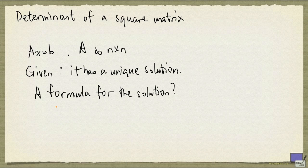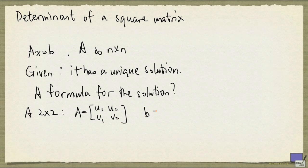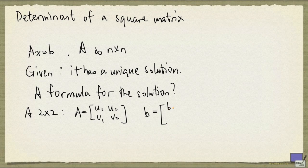Now we can pretty much ignore the 1 by 1 case, because that is too easy. So let's look at the case when A is 2 by 2. And we will write A as the following matrix: u1, u2 in the first row, and v1, v2 in the second row. And we'll take b to be b1 and b2.